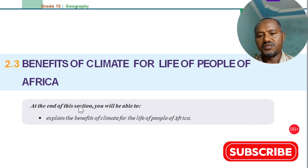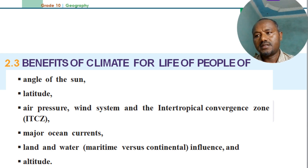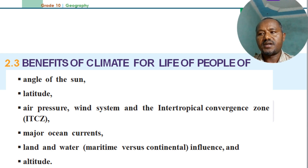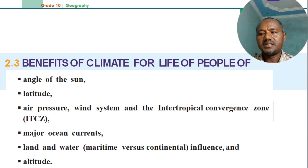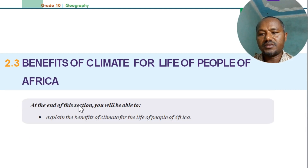The controlling factors of the climate of Africa include: the angle of the sun, latitude, air pressure, wind systems, the Inter-Tropical Convergence Zone, ocean currents, land and water bodies, and altitude.